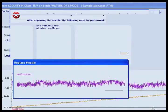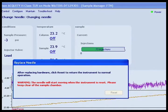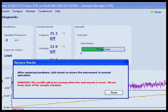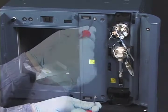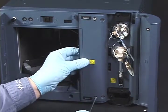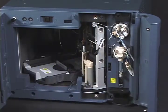A second message reminds you to click Reset to return the instrument to normal operation and to keep clear of the sample chamber after replacing the hardware. Using the T20 Torx driver, loosen the two captive screws that secure the access panel and then remove the panel.